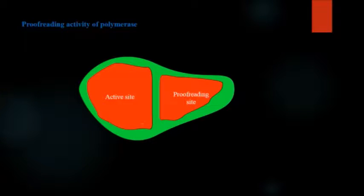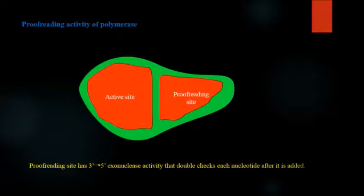In polymerase, there are two sites: active sites and proofreading site. The proofreading site has the activity of three-prime to five-prime exonuclease activity that double checks each nucleotide after it is added and this prevents misreading or mispolymerization. We can say that it provides accuracy to the replication.